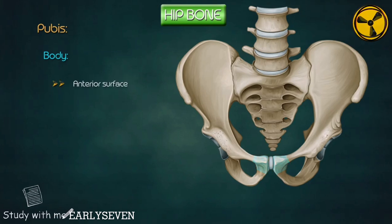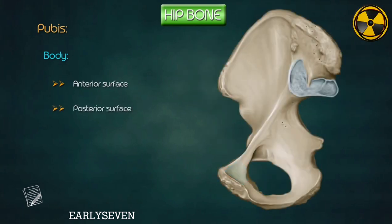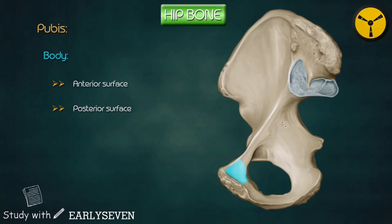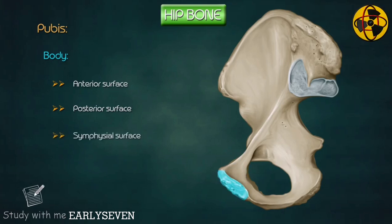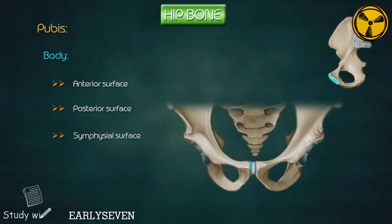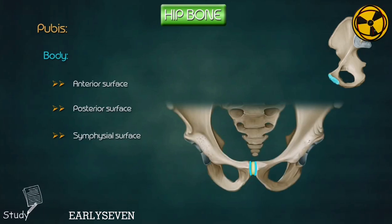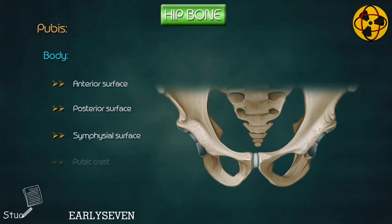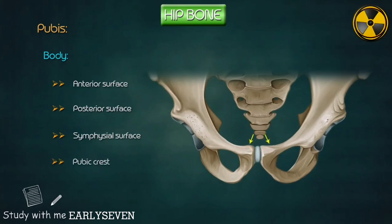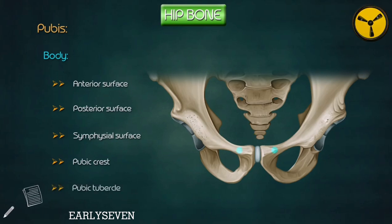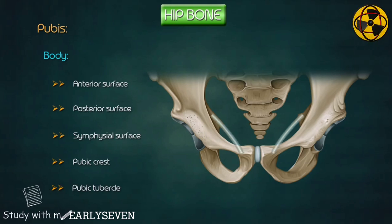The anterior surface faces forwards, downwards, and laterally. The posterior surface is smooth and forms the anterior wall of the bony pelvis; its upper part is related to the urinary bladder. The symphysial surface is rough and oval, articulates with the symphysial surface of the opposite pubis to form a secondary cartilaginous joint, and is covered by hyaline cartilage. The pubic crest is the blunt upper border of the pubis. The pubic tubercle is a rounded projection at the lateral end of the pubic crest, crossed by the spermatic cord in males or round ligament of the uterus in females.